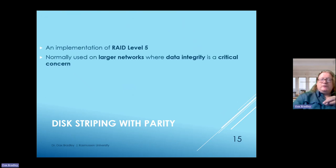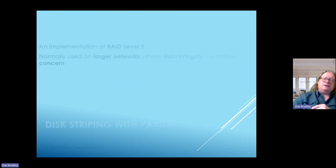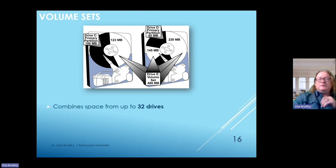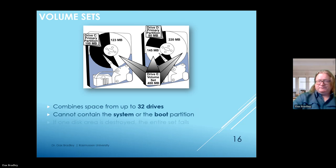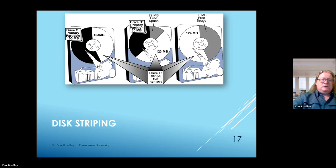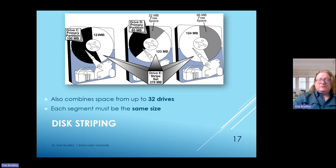With RAID Level 5, we're working with disk striping with parity, normally used on larger networks where data integrity is a primary concern. Volume sets combine space from up to 32 different drives but cannot contain the system or boot partition—if one disk area is destroyed, the entire set fails. With disk striping, it also combines space from up to 32 drives, and each segment has to be the same size.